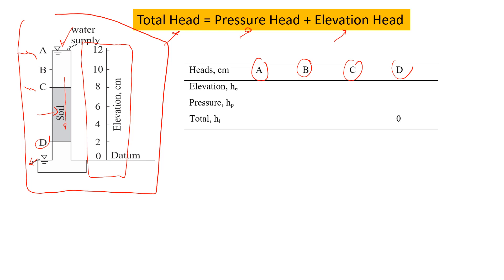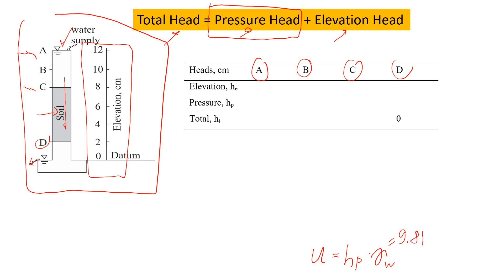When we talk about soil mechanics, the most important thing for us will be pressure heads, because once we know the pressure head we can estimate pore pressure. I would recommend you watch my videos about pore pressure. The formula to calculate pore pressure is pressure head times unit weight of water, and the unit weight of water is 9.81. So this is how easily we can estimate pore pressure, but for that we need to know the pressure head.